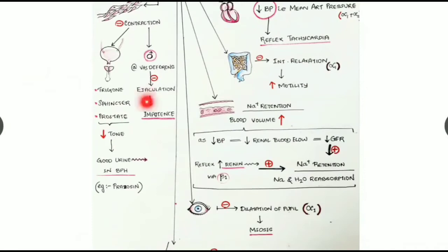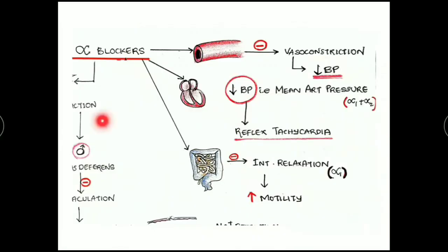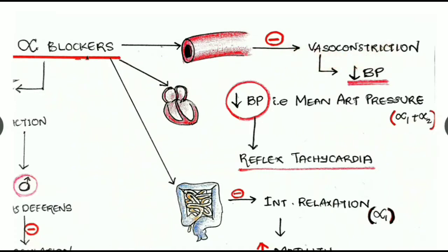Next, let's look at the uses and functions of alpha blockers. Alpha blockers cause blockade of alpha receptors in blood vessels, causing inhibition of vasoconstriction and resulting in reduced blood pressure. In the heart, this reduced mean arterial pressure causes reflex tachycardia.